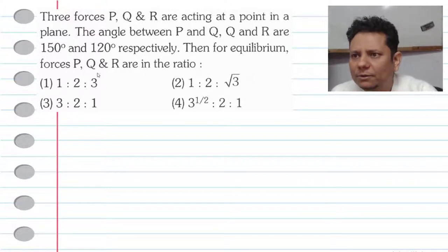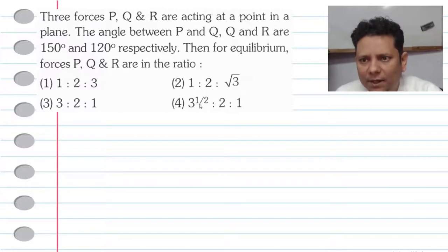Then for equilibrium the forces P, Q and R are gonna be in this ratio: 1 is to 2 is to 3, or 1 is to 2 is to root 3, or 3 is to 2 is to 1, or root 3 is to 2 is to 1. Now let me see our problem.